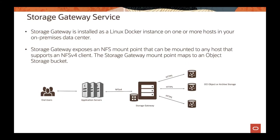A storage gateway is an appliance you can install in your on-premises environment. Your applications connect to that appliance and send data over to an NFS file system. This appliance is a virtual machine — specifically a Docker container — that you can install on top of a Linux environment and bring up in your on-premises setup.